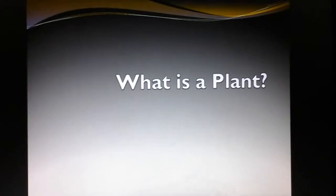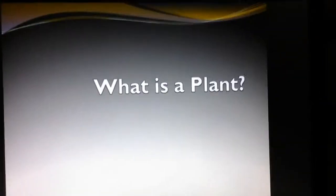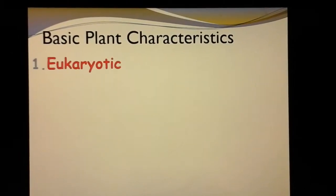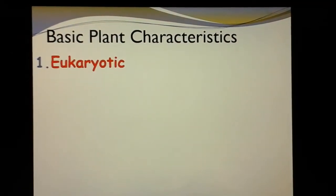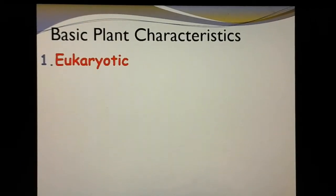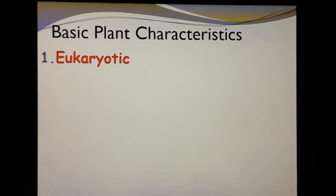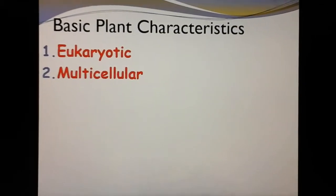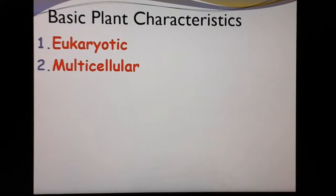The first thing on your page is that all plants are eukaryotes. Remember, if you're a eukaryote, that means you have a nucleus. If you're a prokaryote, you're a bacteria. All plants have a nucleus. Also, they are all multicellular. This is why certain types of algae can't be called plants.